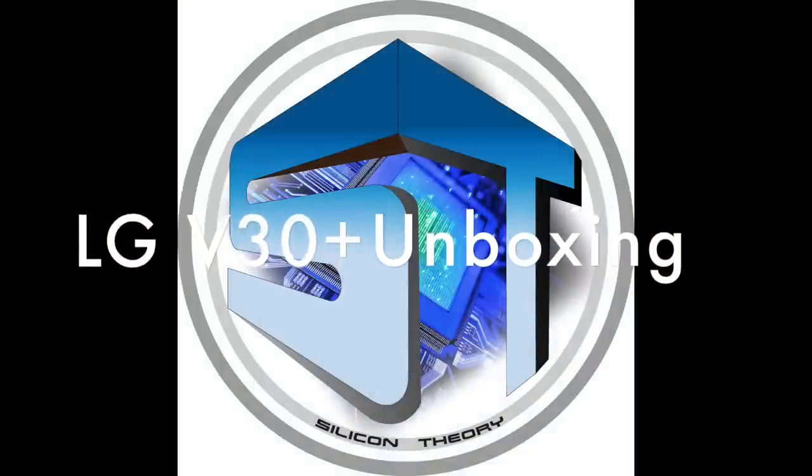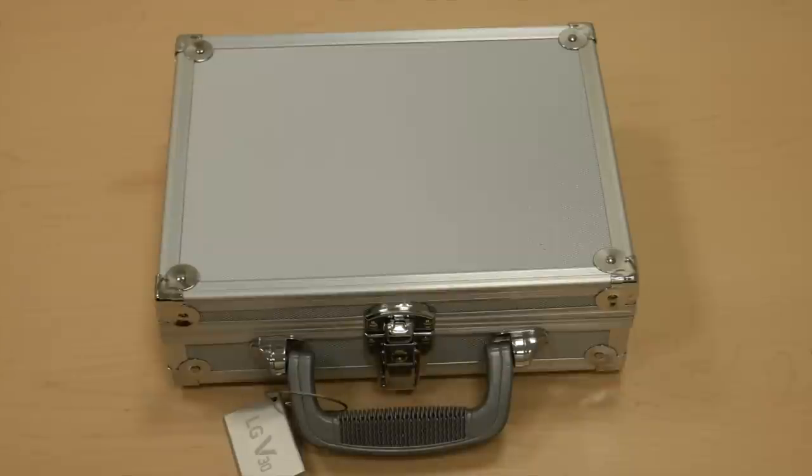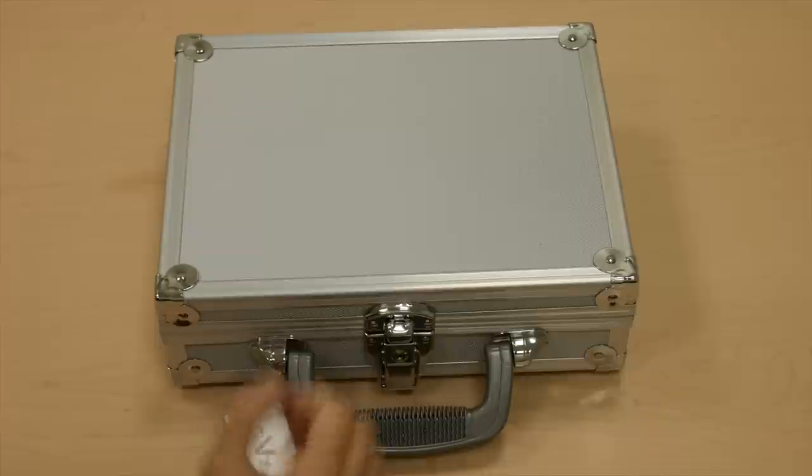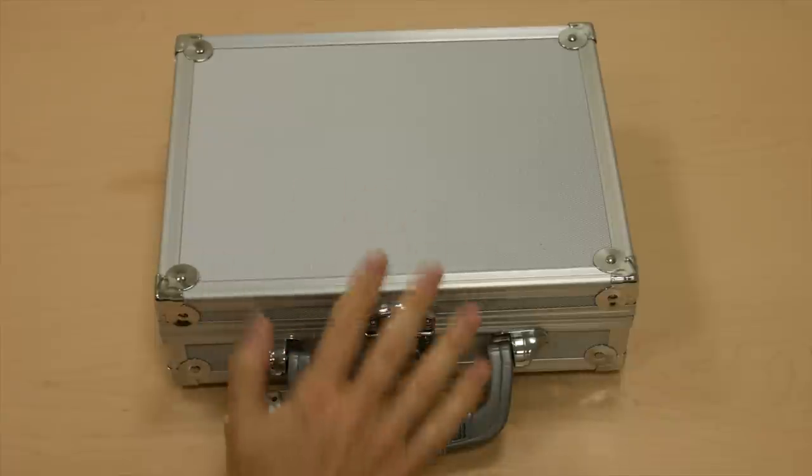Just a quick note: this is the review unit device which showed up in this case that looks like it should have been handcuffed to somebody's wrist. Just remember that your retail unit won't look like this as we get started.